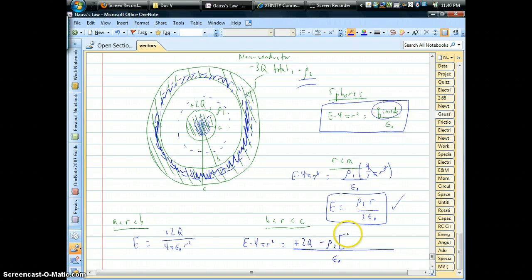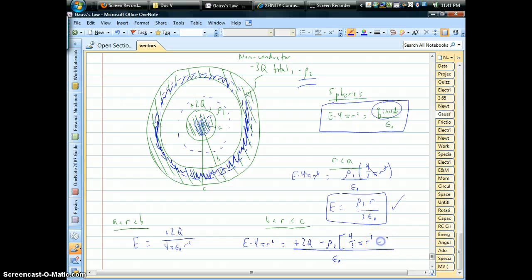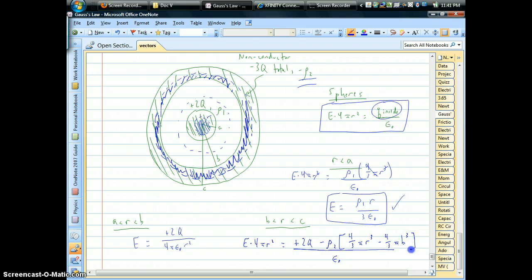So if we took 4/3 π r cubed, that would be the total volume all the way out to that dashed line, that's inside the material. Now the trouble is there's a hollow part. So we have to subtract the hollow part. So minus 4/3 π b cubed.